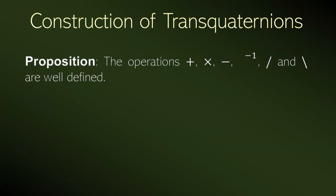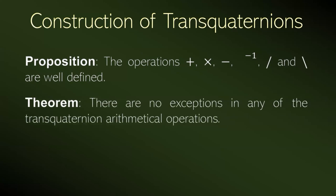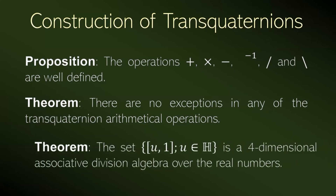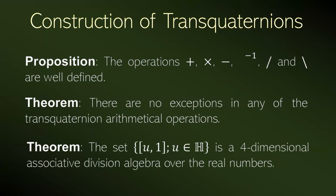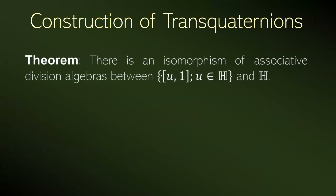The important feature — and it is because of this that we made this construction — is that there are no exceptions in any arithmetic operation on transquaternions. In particular, division by zero is allowed. We have that this subset of transquaternion numbers — the set of classes where the second coordinate is 1 — is a four-dimensional associative division algebra of the real numbers. Because of this, there is an isomorphism between this subset of the transquaternions and the set of the quaternions.